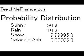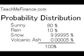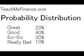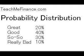If you add up all the probabilities, they have to equal 100%. Now, instead of the weather, you can make a probability distribution for the economy next year. Let's say that you believe there's a 20% chance that the economy is going to be great, a 40% chance that it's going to be good, a 30% chance that it's going to be so-so, and a 10% chance that it's going to be really bad.